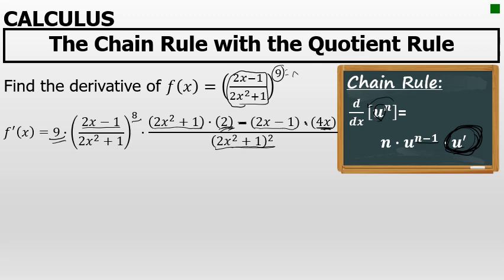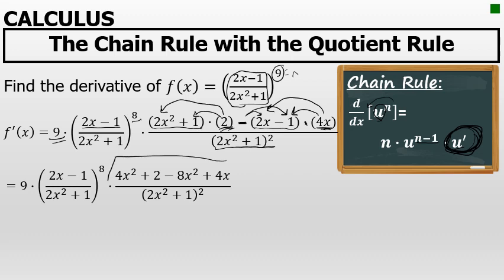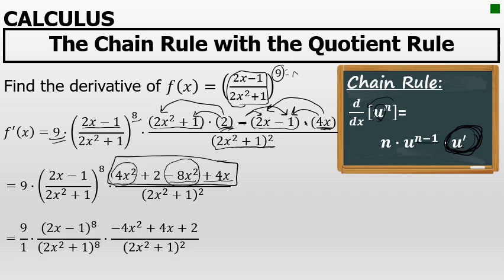I'm going to have to do some algebra to simplify this. That involves distributing the 2 through the quantity of 2x squared plus 1, and then distributing not only the negative in front of the quantity of 2x minus 1, but also distributing the 4x. The result of distributing the 2 is 4x squared plus 2. The result of distributing the negative and 4x: negative 4x times 2x is negative 8x squared, and negative 4x times negative 1 is plus 4x. There are some like terms that can be combined here. 4x squared minus 8x squared is negative 4x squared.